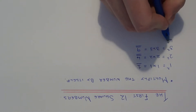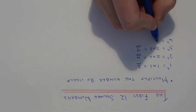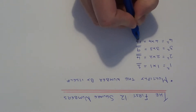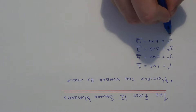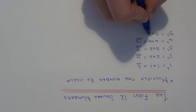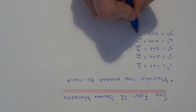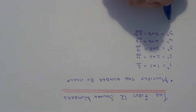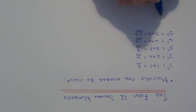The next one is 4 squared, which is 4 times 4, which gives us 16. So 16 is your fourth square number. The next one will be 5 squared, which is 5 times 5. That gives us 25, so 25 is your fifth square number.